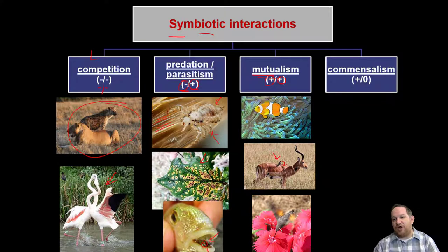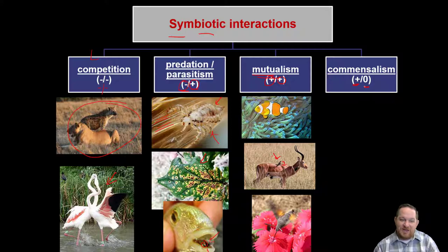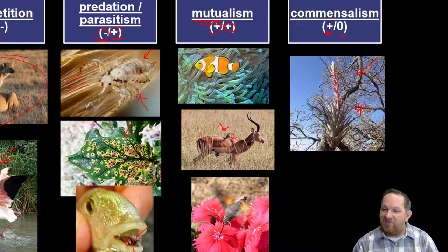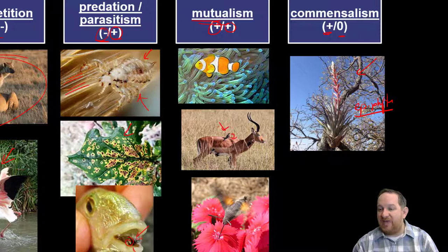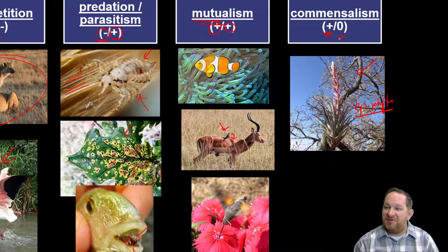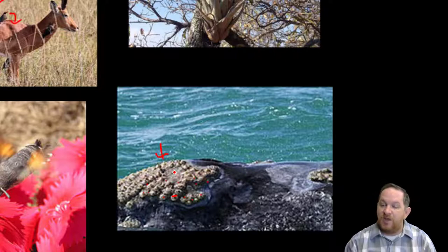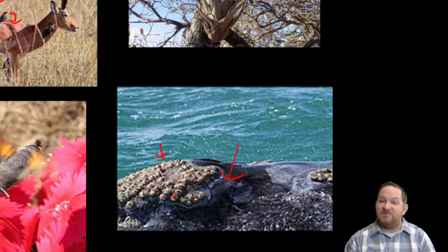The last category is commensalism — this is when one benefits and the other is neutral, neither harmed nor benefiting. This is the example we started the video with: a random plant growing out of a tree. This is an epiphyte. The epiphyte benefits because it has a place to grow, but it's actually not hurting the tree. Barnacles attached to whales are another prime example — the barnacles benefit by getting resources and moving through the water, but they don't seem to hurt the whale. One benefits, the other is not harmed — that's commensalism.